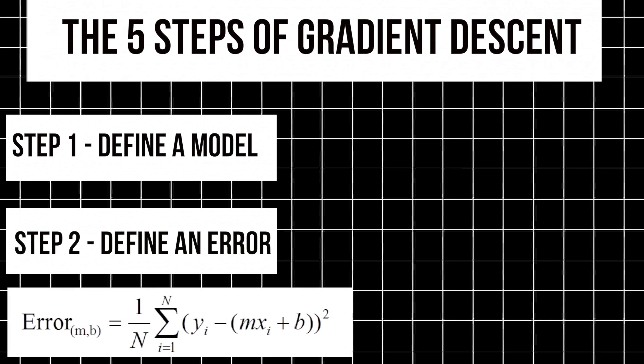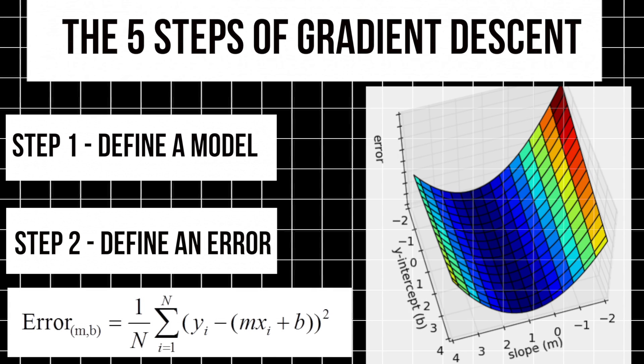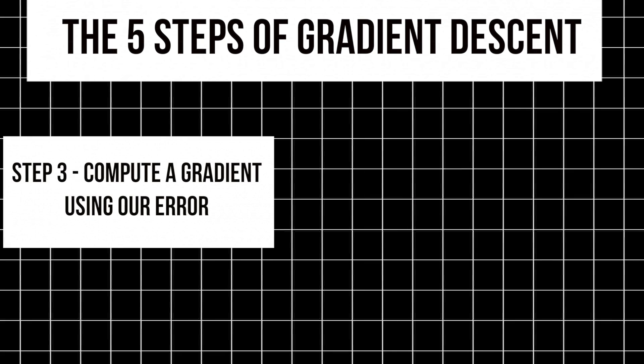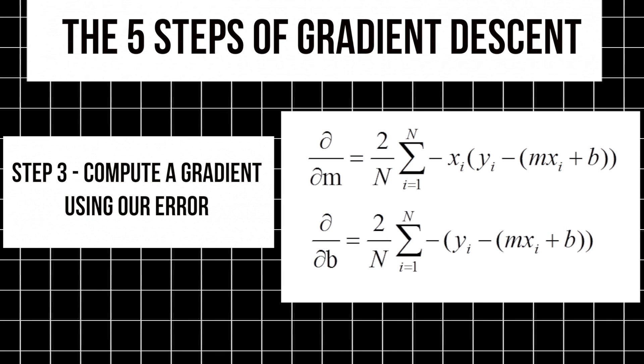We'll define an error function, and when we plot the graph of the relationship between all the possible error values and all the possible weight values for our function, we'll see that there exists a valley, a minima. We'll use our error to help us compute the partial derivative with respect to each weight value we have, and this gives us our gradient.